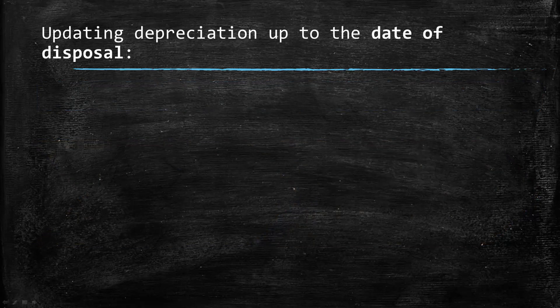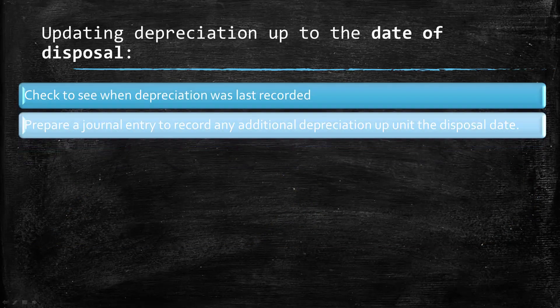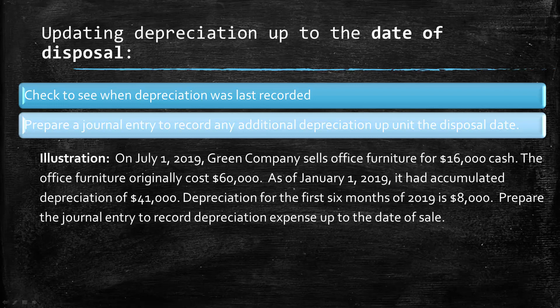When updating the depreciation, you need to check and see when depreciation was last recorded. It will be given to you in such a way that you can see when the last time they recorded the depreciation was. Then you need to do the journal entry to record any additional depreciation until the date of disposal. So let's look at this example.